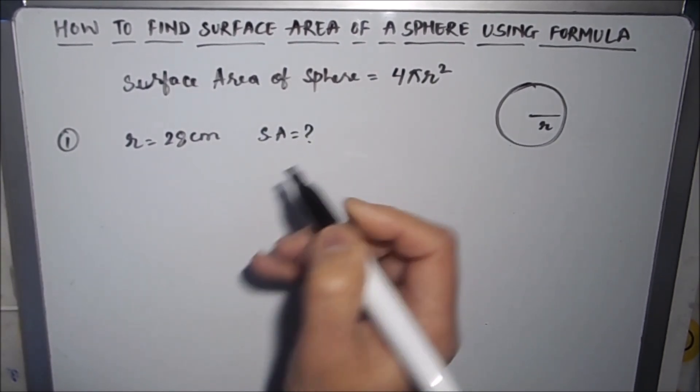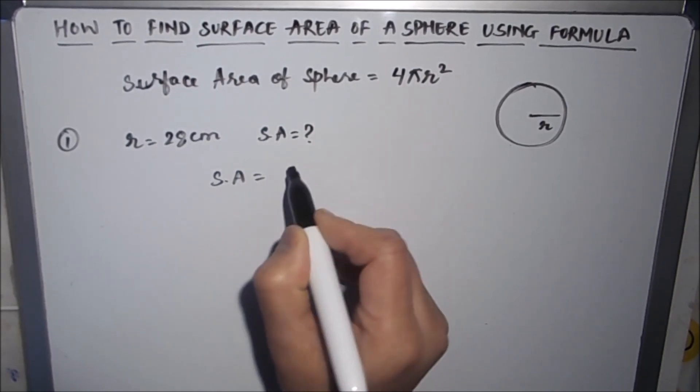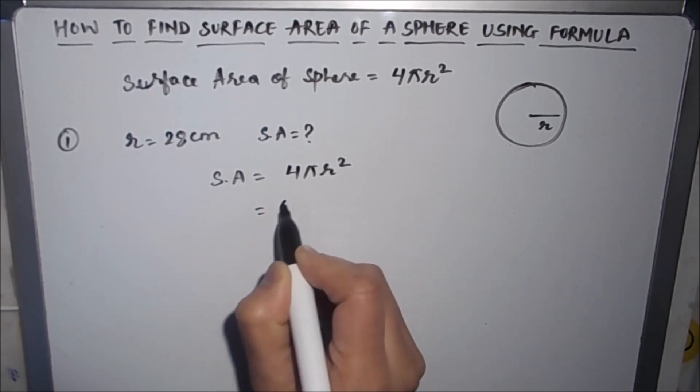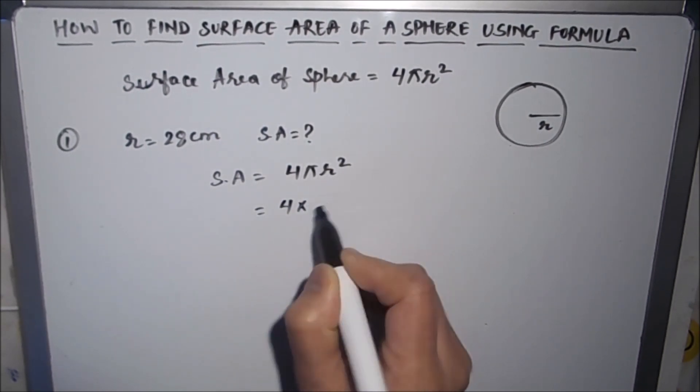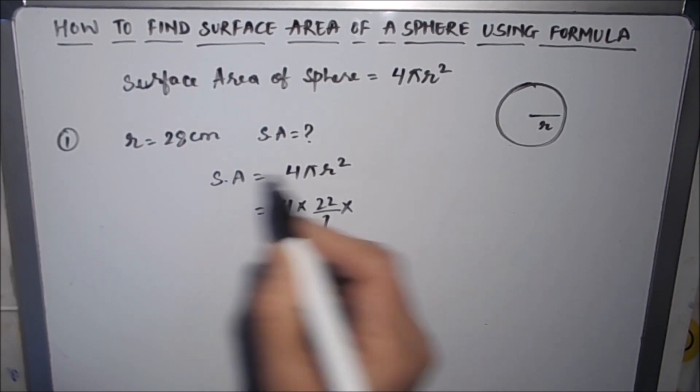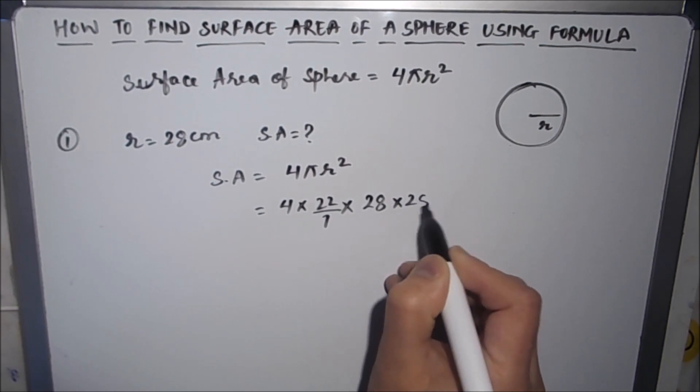We will write the formula and substitute the values: S.A. = 4πr² = 4 × 22/7 × 28 × 28. Since π is 22/7 and r² is 28 times 28...